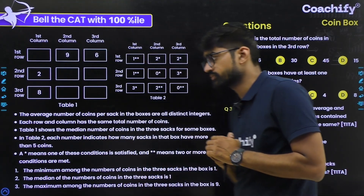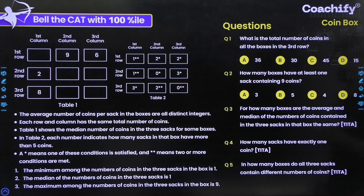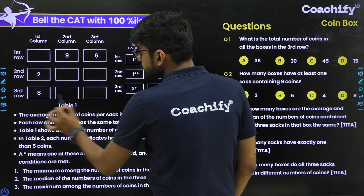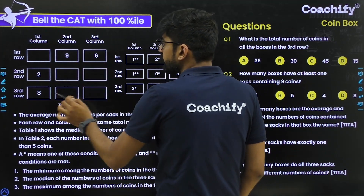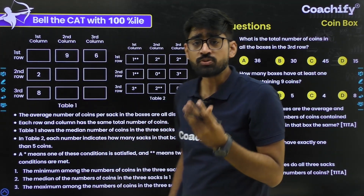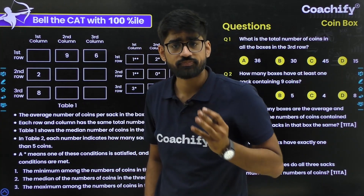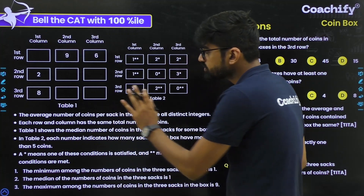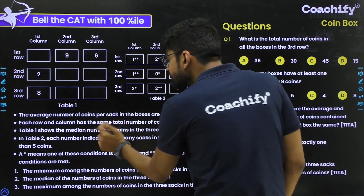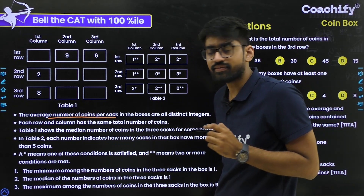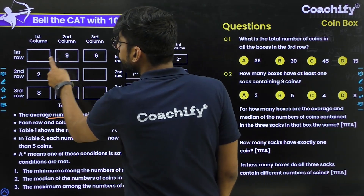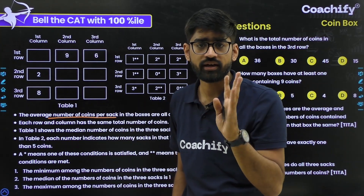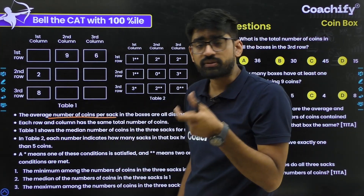We are provided with nine boxes in total arranged in three rows and three columns, and in each box we have three sacks with a certain number of coins in each sack. The very first point says the average number of coins per sack — you find this by taking the total number of coins in any box and dividing by three, since there are three sacks in any box.